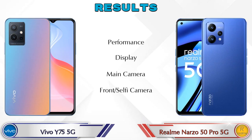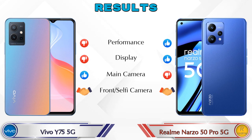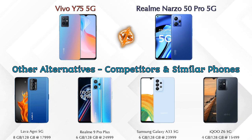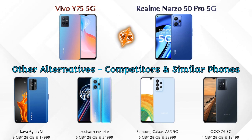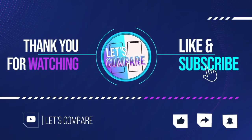Finally, the result: in performance, the 50 Pro 5G is ahead; in display, the 50 Pro 5G is ahead; in main camera, the Y75 5G is ahead; in front selfie camera, both phones are the same. If you're looking at other competitors at the same price: first is Lava Agni 5G, second is Realme 9 Pro Plus 5G, third is Samsung Galaxy A33 5G, and fourth is iQOO Z6 5G. Details about all competitor phones are available in the description. If you liked our video, please like and subscribe — thanks for watching!